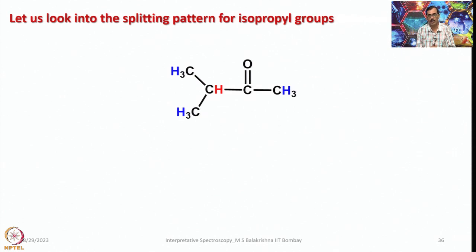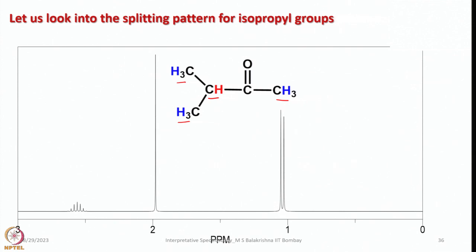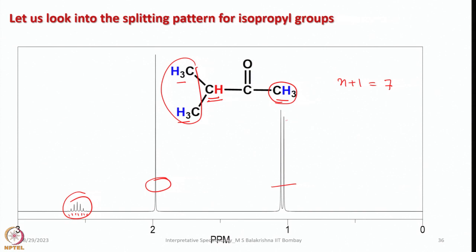Now let us look into the splitting pattern for isopropyl groups. We can anticipate 3 types of signals: the ring carbon may show a singlet, the CH will show a septet (7 lines), and the two equivalent CH3 groups will be a doublet. The septet intensity pattern can be found using Pascal's triangle. The spacing in the septet and the doublet is the same coupling constant J, which is the vicinal 3J(HH) coupling.